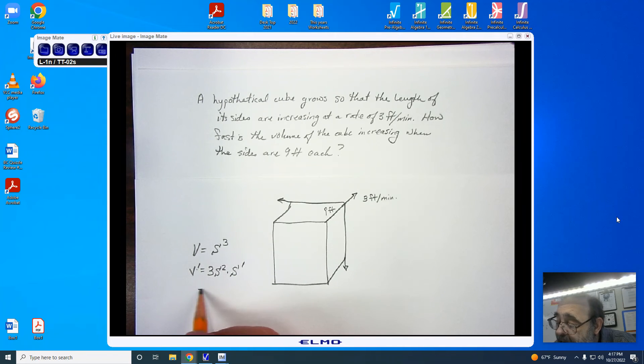Plugging in my values, I have 3 times 9 squared times 3. And you'll notice that I'm now looking at 9 cubed. That's going to be 81 times 9 for... Let's see, 9, 72.